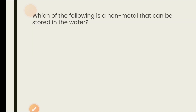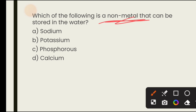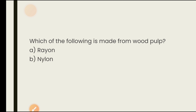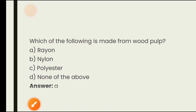Which of the following is a non-metal that can be stored in water? Options are sodium, potassium, phosphorus, calcium. Sodium and potassium are highly reactive metals kept in kerosene oil. Phosphorus is a non-metal that is highly reactive — if left in air it burns. So phosphorus is stored in water to avoid contact with oxygen. Also, which fiber is made from wood pulp? The answer is rayon — rayon is made from wood pulp.